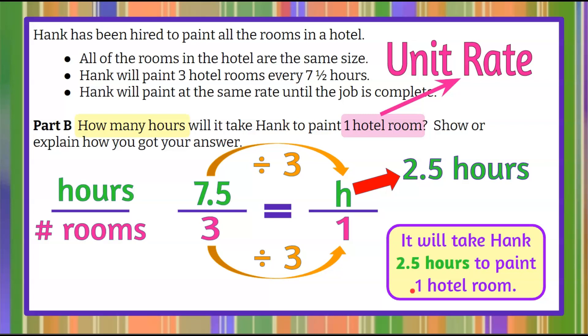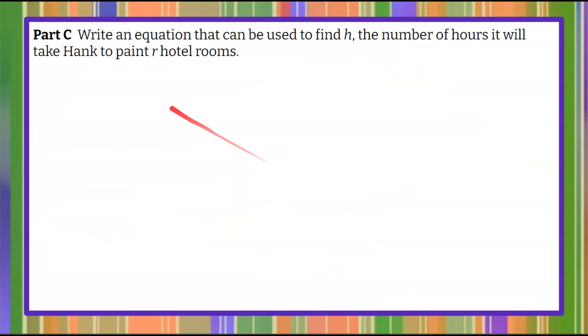Moving on to Part C. We're asked to write an equation that can be used to find h, the number of hours it will take Hank to paint r hotel rooms. Pause the video, write your equation, and then come back to see mine.